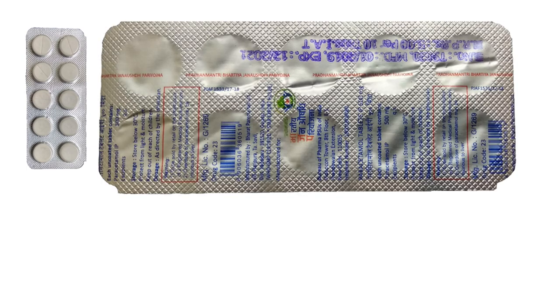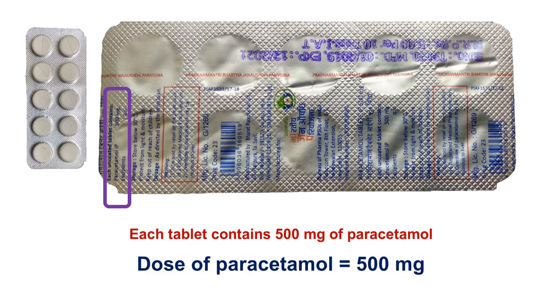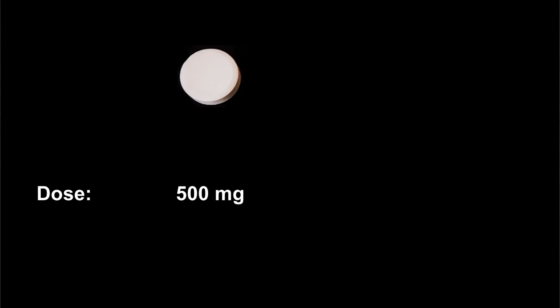Next, let me give you an example using a drug dosage form. This is a strip of paracetamol tablets. On the strip, it says each tablet contains 500 milligrams of the drug — that is the dose of paracetamol present in each tablet, expressed in weight. So if you swallow a tablet you consume a dose of 500 milligrams of paracetamol, and if you break the tablet into two equal halves and swallow one half, you would be consuming a dose of 250 milligrams of paracetamol.